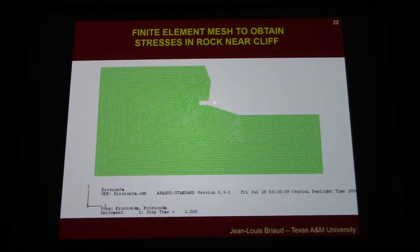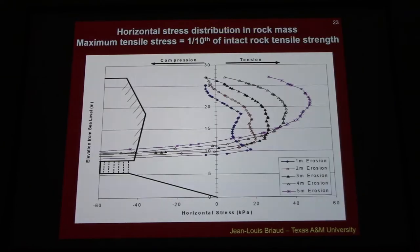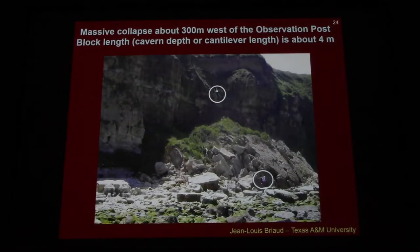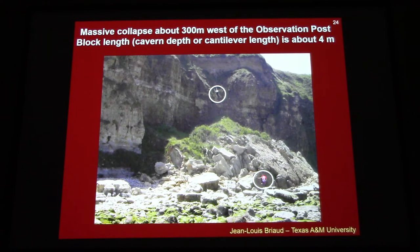So we also did some finite element analysis. You can see the cliff is right here. There is a big cavern at the bottom. And we were looking for the stresses that were developed in the rock mass. We showed what those stresses were and essentially demonstrated that the rock was not strong enough. By the time the cavern became about four meters deep, then the rock was not strong enough to sustain its own weight in cantilever. And here are some examples. You can see the size of the people here. And here's an example of a huge failure that took place.